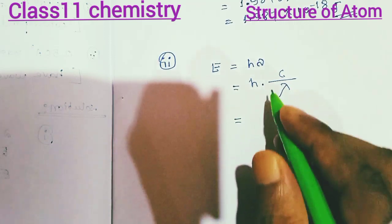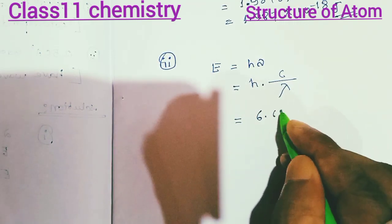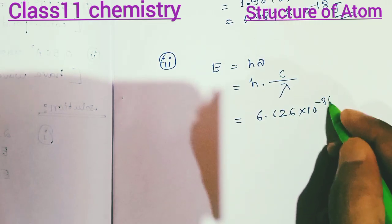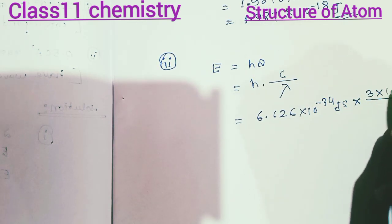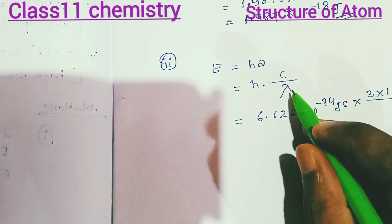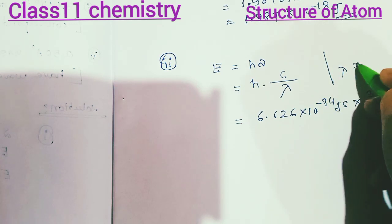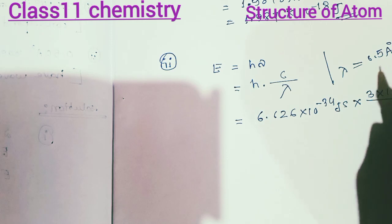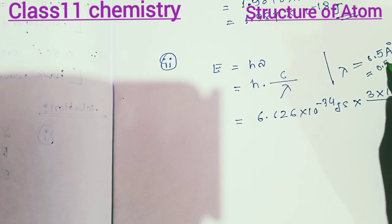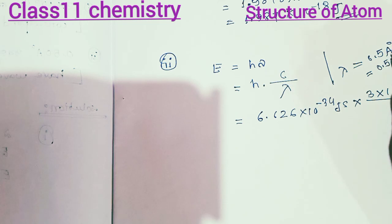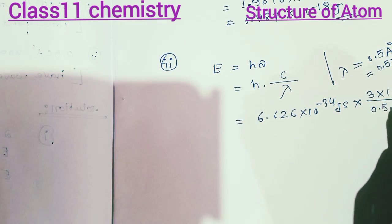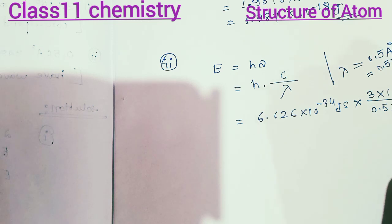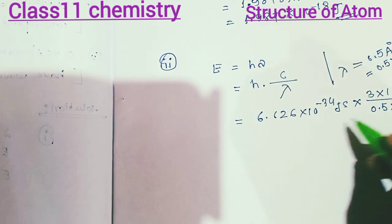We have three known values: h equals 6.626 into 10 to the power minus 34 joules per second. The speed of light c equals 3 into 10 to the power 8 meters per second. Lambda equals 0.5 Angstrom, which is 0.5 into 10 to the power minus 10 meters.